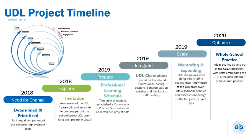The project was mapped out over three years using the professional learning UDL implementation process from CAST. In the beginning of 2018, it was identified there was a need to change — to support teachers to design more inclusive assessment experiences for students. This was determined, prioritised and became an integral component of the school's improvement plan. 2018 also saw the exploration of UDL with a twilight session arranged for all staff. The purpose was to build awareness of the UDL framework and provide an invitation to teachers to become part of the UDL school-based team that would begin the pilot project in 2019.